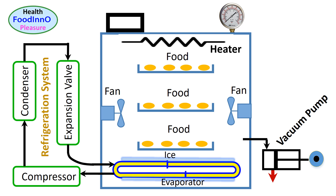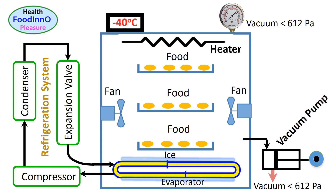First, place the frozen or fresh sample in the freeze-drying chamber. Set the temperature of the chamber below freezing, for example minus 40 degrees C. In this case the refrigeration system can be started to cool the chamber. When the system reaches the set temperature, we can turn on the vacuum pump and it can start to vacuum the chamber.